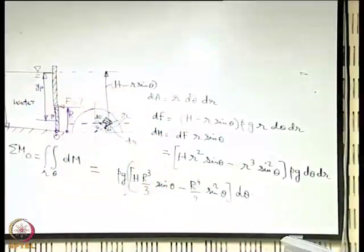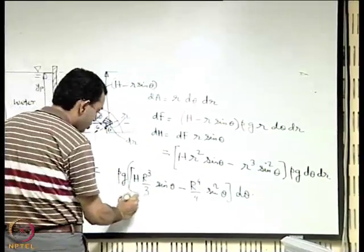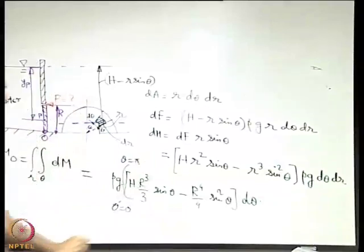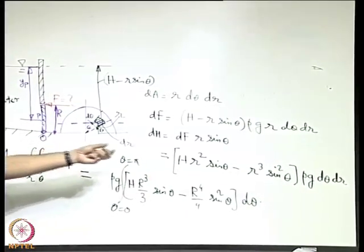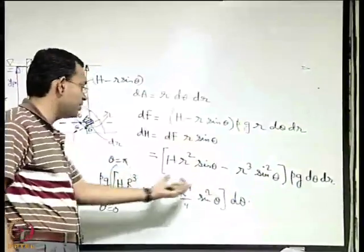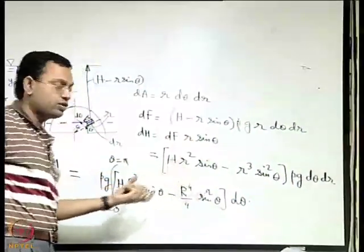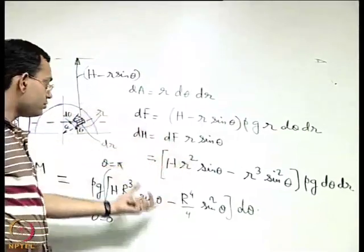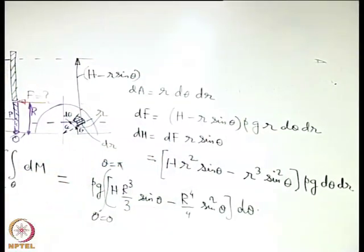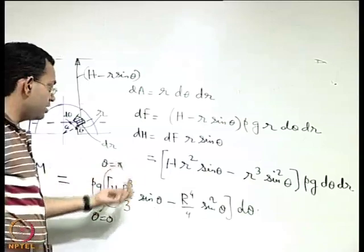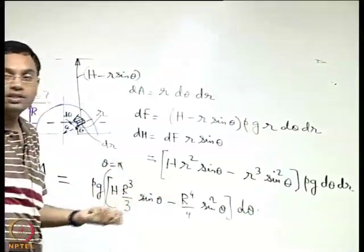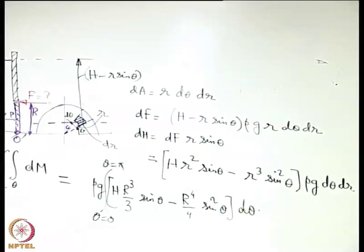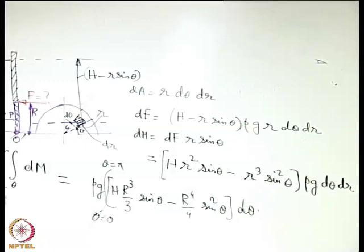Now integrating with respect to θ, the limits are 0 to π. These are straightforward integrals you can complete yourself. Once completed, you get an expression for the resultant moment of the distributed force with respect to O in terms of H, R, ρ, and g. This resultant moment equals F × R.